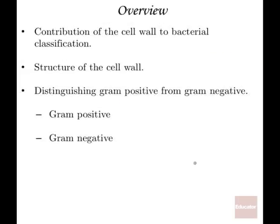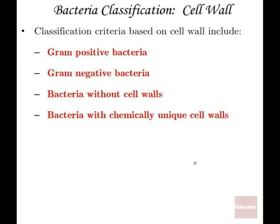The overview of today's discussion: we're going to discuss how the cell wall contributes to bacterial classification, what the structure of the cell wall is composed of, and a brief discussion about distinguishing gram-positive from gram-negative bacteria. We will also review gram-positive and gram-negative characteristics when we begin to discuss various examples of bacteria. Classification criteria include gram-positive versus gram-negative, bacteria with no cell wall at all, and bacteria with chemically unique cell walls, which will be discussed in a separate lecture.